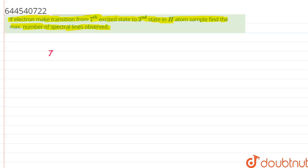So basically, if we have been given 7th excited state, it means that N2 is equal to 7 plus 1, that is 8.